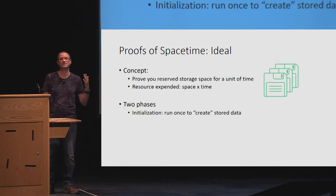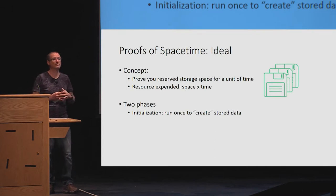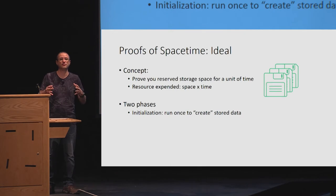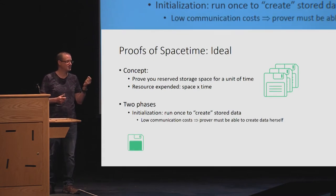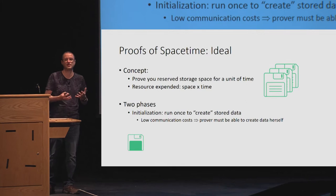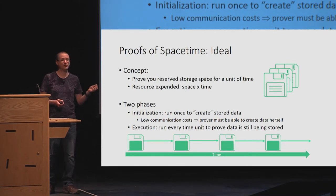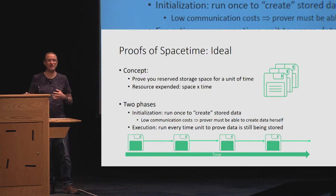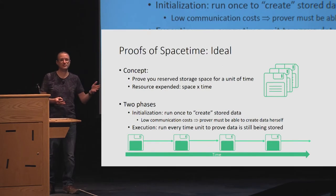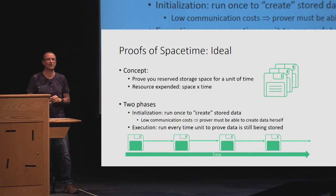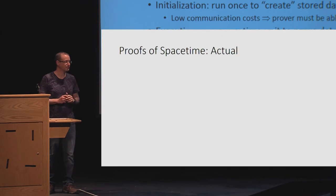In a proof of space-time, we have two phases. We have an initialization phase where the prover generates the data to fill their disk with. The reason they have to generate it themselves is that we want low communication. If I'm trying to use a large amount of disk space and want to keep communication low, the data has to come from me. In the second phase, called the execution phase, which we run every unit of time, I prove that I'm still storing this data. So I've shown that I filled my disk and am keeping it full for however long I'm running these execution phases.